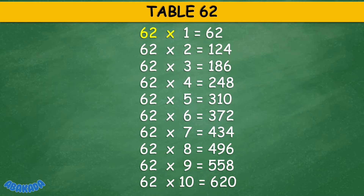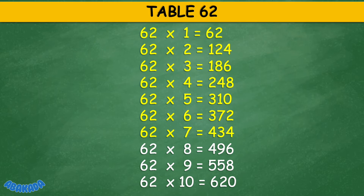Table 62: 62 times 1 equals 62, 62 times 2 equals 124, 62 times 3 equals 186, 62 times 4 equals 248, 62 times 5 equals 310, 62 times 6 equals 372, 62 times 7 equals 434, 62 times 8 equals 496, 62 times 9 equals 558, 62 times 10 equals 620.